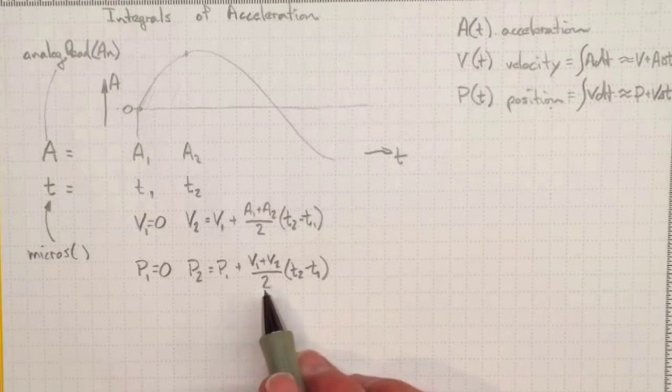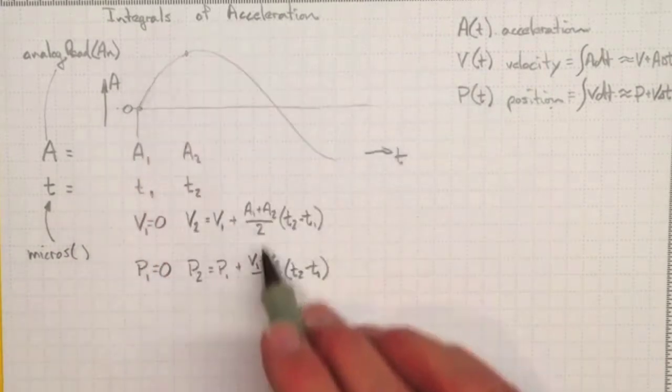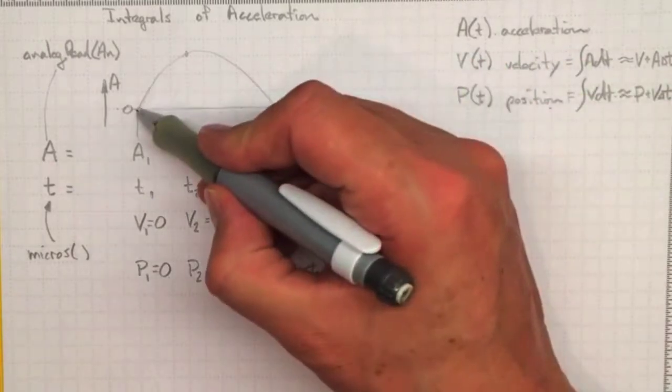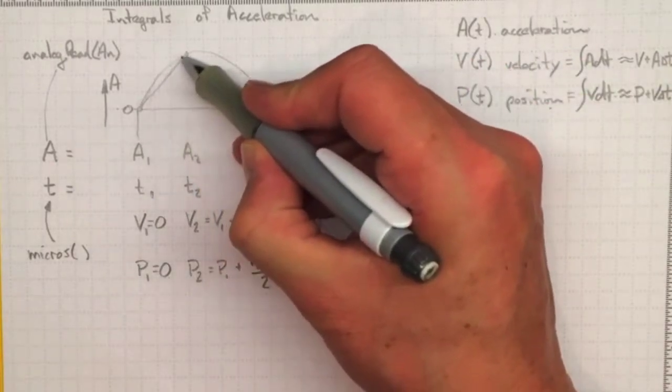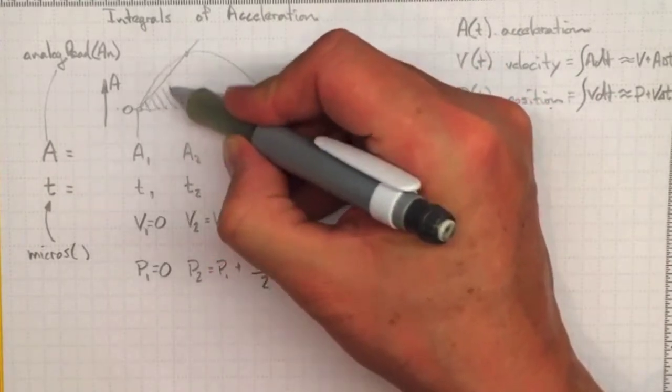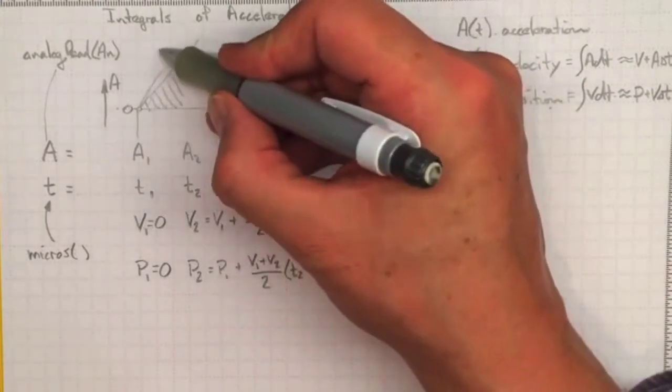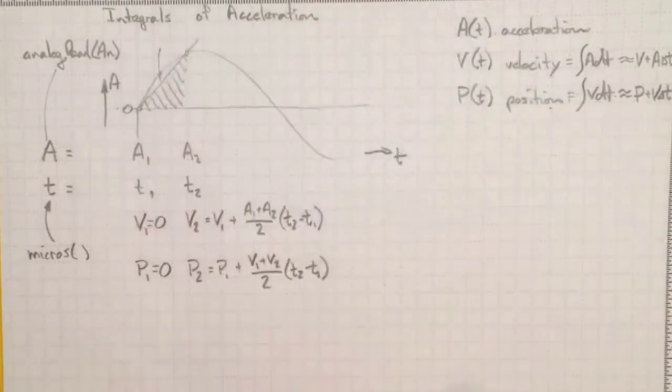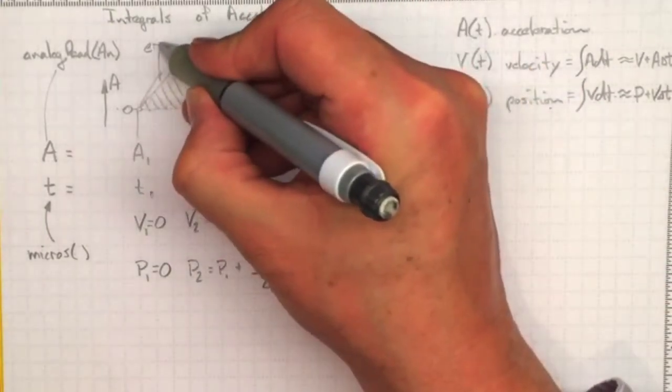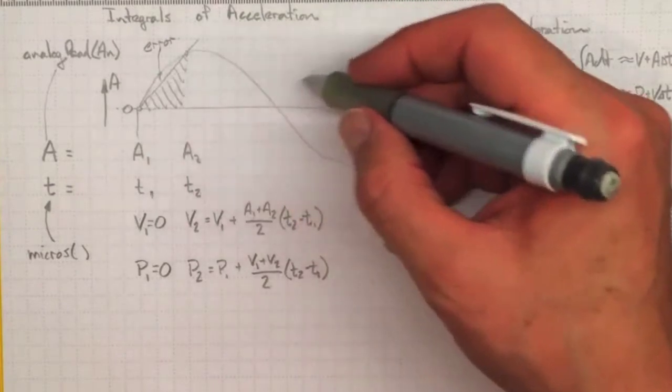So with better numerical methods we could make a higher order estimate. This estimate that we're making here is basically just saying we'll draw a line across there that's like trapezoidal rule and we'll count that area under that triangle there. So this area in here is something that we're missing and that's giving us an error in our estimate.